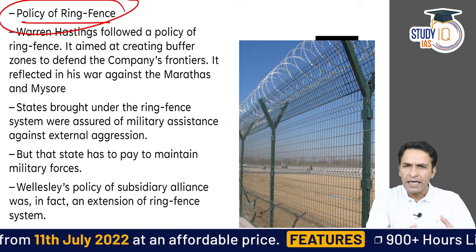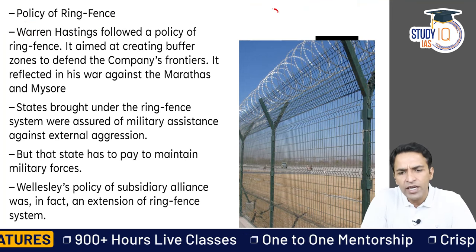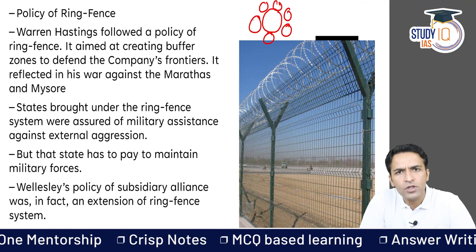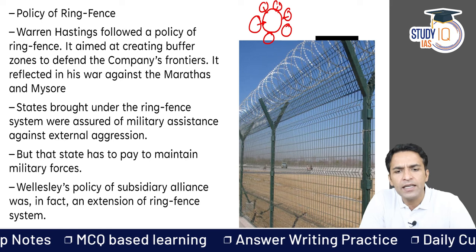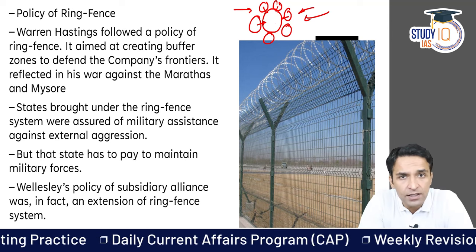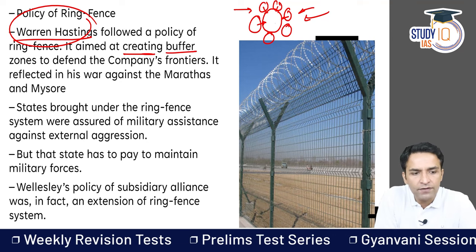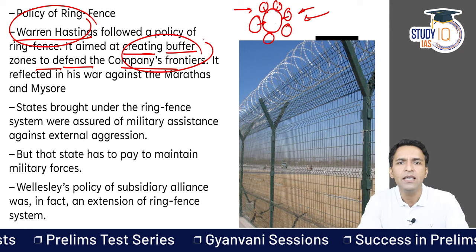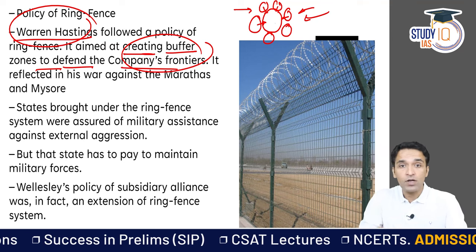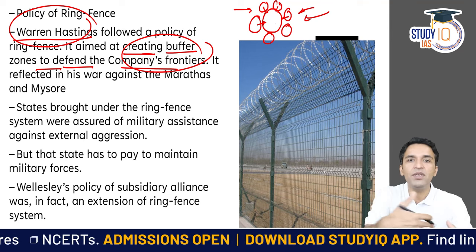The Policy of Ring Fence: the process is quite simple. When the Britishers acquired one territory, the kingdoms and princely states on all four sides had a subsidiary alliance with them, so that anybody attacking the Britishers first had to pass through them. Warren Hastings started this kind of policy — it wanted to create buffer zones to defend the company's frontiers. When engaged with a power, they always ensured there was a buffer zone between the East India Company territory and the enemy regional powers, so they could attack enemy regional powers very easily.